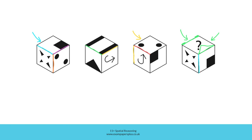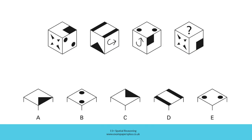Now all we need to do is look for this figure amongst the answer options and check to ensure it's in this orientation. As you can see, although the correct figure appears twice in the answer options, it's only correctly orientated in option A, meaning A is the right answer here.